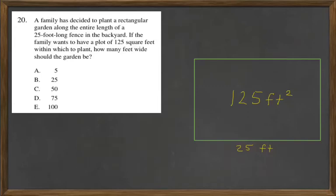A family has decided to plant a rectangular garden along the entire length of a 25-foot long fence in the backyard. If the family wants to have a plot of 125 square feet within which to plant, how many feet wide should the garden be?